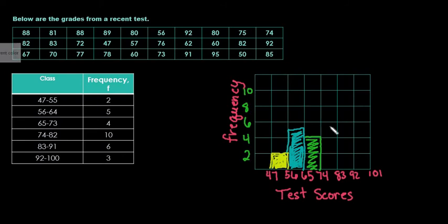Next category, from 74 to 82, we have a total of 10. So this would be our highest frequency. If we were looking for the mode, this would be the mode of the graph. This is where the most data points occur, between 74 and 83.